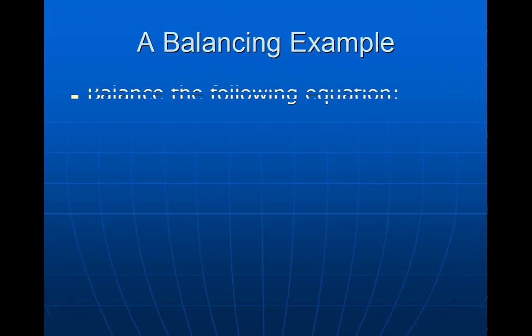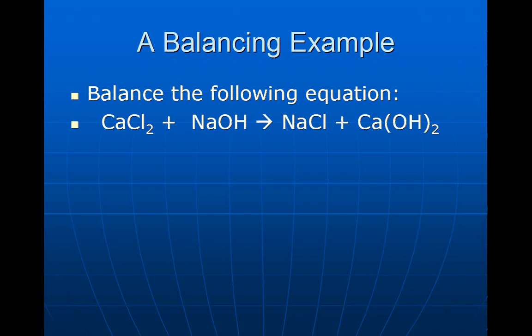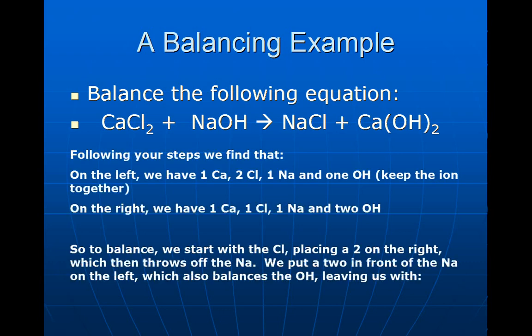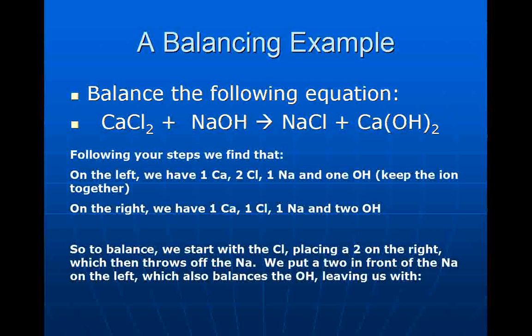Let's look at an example: balance the equation CaCl2 plus NaOH yields NaCl plus Ca(OH)2. One key is that OH is an ion called hydroxide, so we keep it together when counting atoms. On the left we have 1 Ca, 2 Cl, 1 Na, and 1 OH. On the right we have 1 Ca, 1 Cl, 1 Na, and 2 OH. To balance, we start with Cl — staying away from hydrogen and oxygen as long as possible. We place a 2 in front of NaCl on the right, giving 2 Cl but also 2 Na. Then we place a 2 in front of NaOH on the left to balance the Na, which also balances the OH. Now we have 1 Ca, 2 Cl, 2 Na, and 2 OH on both sides.